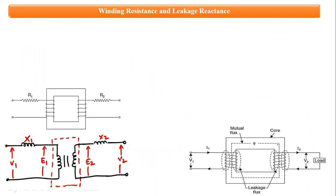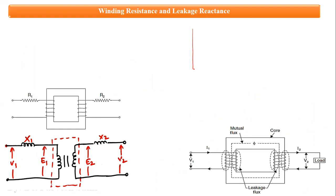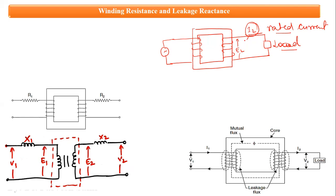Now let us understand winding resistance and leakage reactance. When the transformer is connected to a load, current i2 flows through the secondary winding at its rated value, meaning the demand for current has increased. This current i2 is due to EMF e2, which is due to flux from the primary current i1.